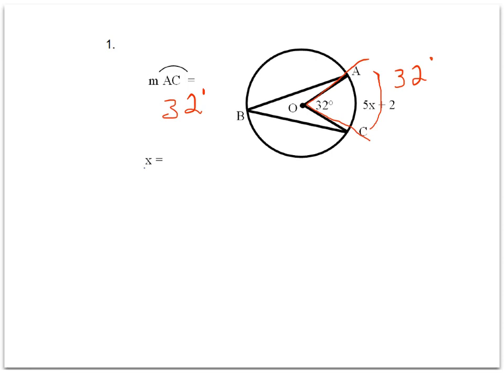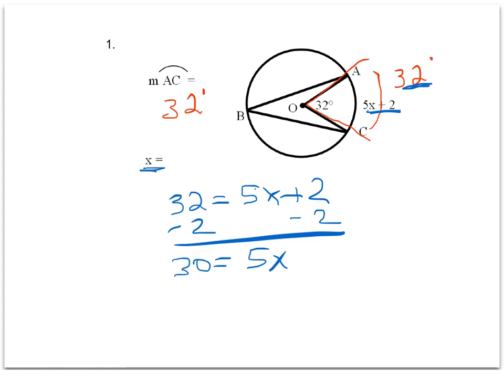That can lead us right into finding the value for x, because if the measure of arc AC is 32 degrees, we'll set that equal to 5x plus 2, and now we have an equation where we can solve for x. We get 5x equals 30, and so our x value is 6.